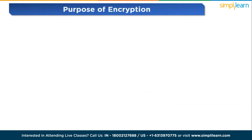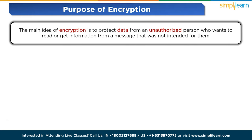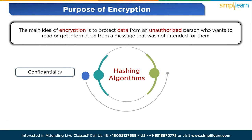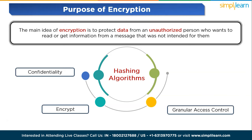Now we'll see the purpose of encryption. The main idea of encryption is to protect data from an unauthorized person who wants to read or get information from a message not intended for them. Encryption enhances security when sending messages through the internet or any given network. Key security elements that encryption helps enhance include: confidentiality — encrypted messages cannot be read or changed by another person; granular access control — users are limited to what they can see and do, making auditing for accountability easy; and in the case of a message leak, it is easy to trace who did it and when, so security breaches can be sorted out effectively. Authentication — the origin of the message received can be traced, thus facilitating authentication.